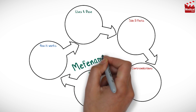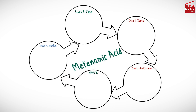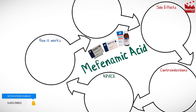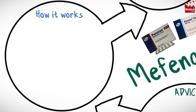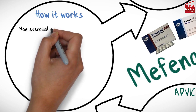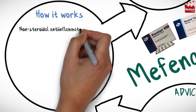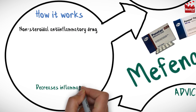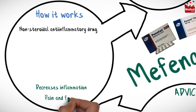In this video we'll briefly discuss what mefenamic acid is and how it works, what it's used for, the dose, side effects, and contraindications and precautions. Mefenamic acid is a non-steroidal anti-inflammatory medication that decreases inflammation, pain, and fever.